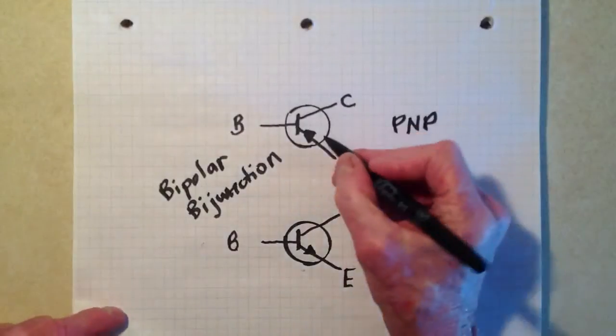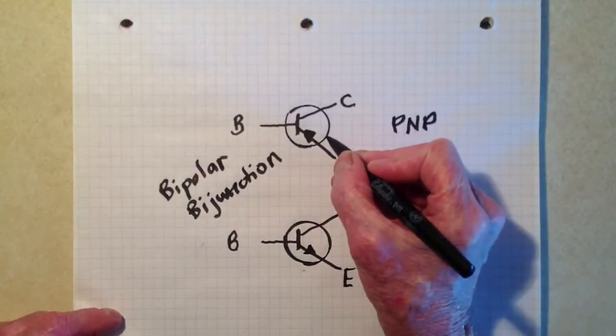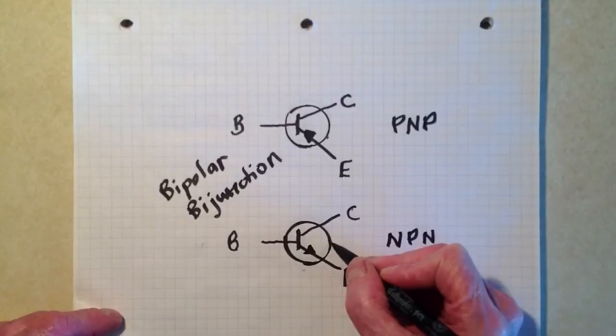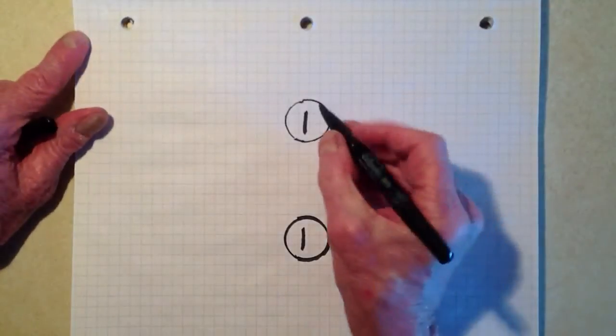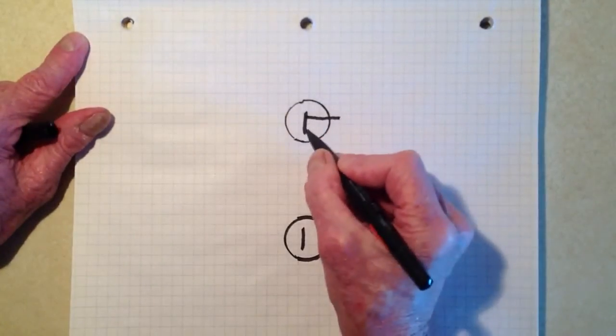Now, as a word of caution, you may occasionally see transistors shown in circuits without these circles. Same thing for field effect transistors.